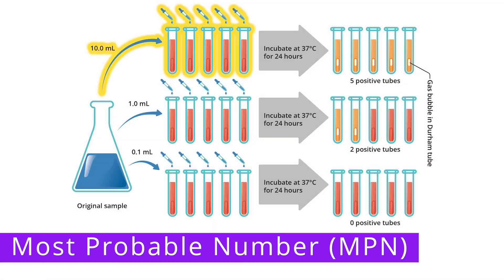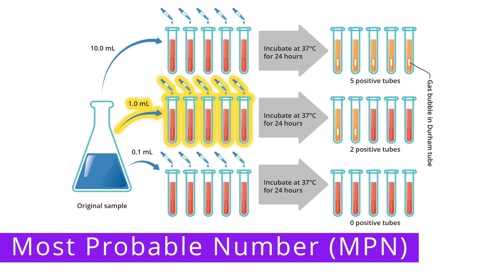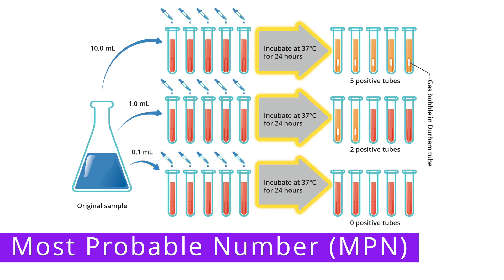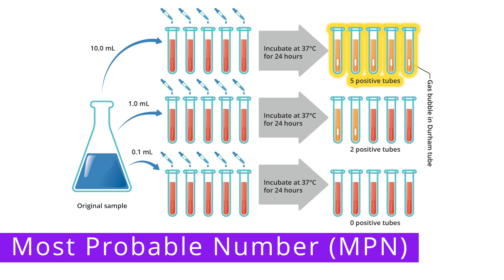With this MPN test, we put 10 milliliters of the sample into each of the five tubes in the first set of lactose broth tubes. We then put 1 milliliter of the sample into each of the five tubes in the second set, and then 0.1 milliliters into each of the tubes in the last set of lactose broth tubes. All of the tubes are then incubated, and after incubation, they are examined for lactose fermentation, which would cause a change in color and the production of gas, as seen in the Durham tube. Next, we count the number of tubes that exhibited these changes in each of the three sets. In this example, all five tubes in the first set changed color and had gas present. In the second set, two tubes had a color change and gas. In the third set, none of the tubes showed a change in color or had gas present.